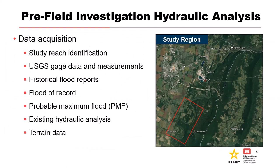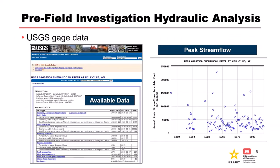First we'll talk about data acquisition, including study reach identification which we discussed in the previous lecture. Once you know where your study reach is, we need to acquire gauge data like from a USGS gauge, field measurements including indirect measurements such as slope areas that are often done for large historical floods, historical flood reports, what is our probable maximum flood, what existing hydraulic analysis do we have, and what's the best terrain data we can find for this reach. We want to find the obvious and readily available USGS gauge data to understand flow magnitudes observed for our study reach.